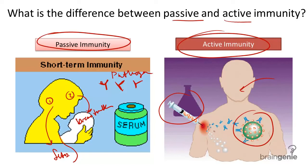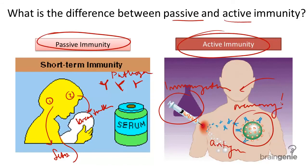So an example of active immunity is an immunization. When you receive a vaccination or an immunization, you are intentionally getting a small dose of an antigen, so that if you are ever exposed to that antigen again in the future, your body will have the memory cells to fight it off. The antigen is actually a weakened or dead version of the actual pathogen, so it actually won't cause the disease itself.